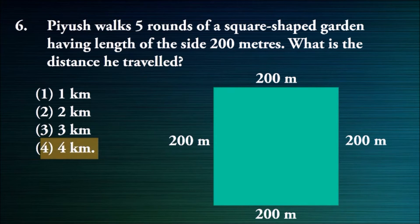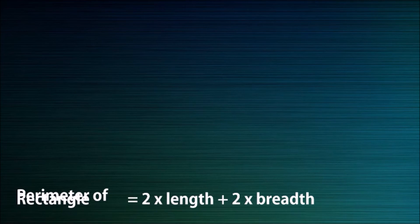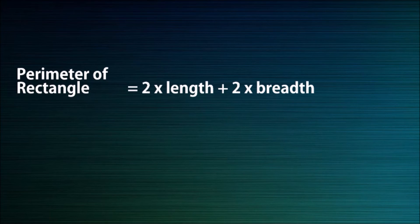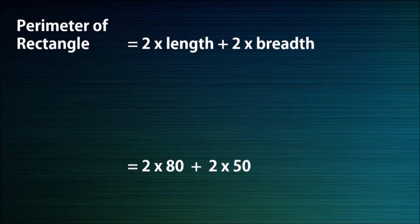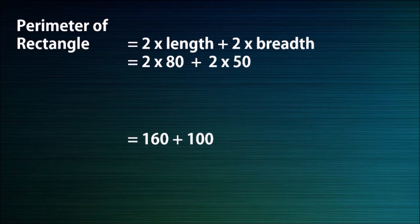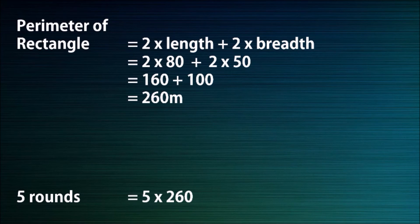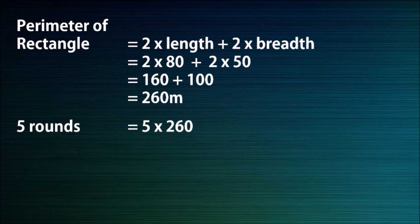Question number seven: what is the length of wire required to fence a rectangular garden of length 80 meter and breadth 50 meter with 5 rounds of wire? Options: 1080 meters, 1200 meters, 1040 meters, or 1300 meters. Perimeter of rectangle equals 2 times length plus 2 times breadth: 2 times 80 plus 2 times 50 equals 160 plus 100, which equals 260 meters. For 5 rounds: 5 times 260 equals 1300 meters. Fourth option, 1300 meters, is the correct answer.